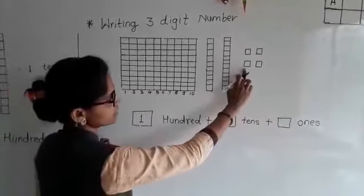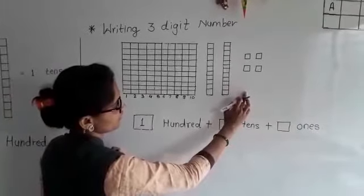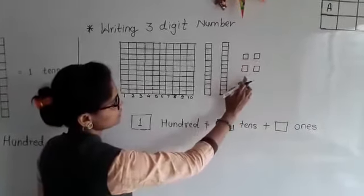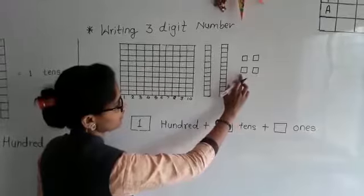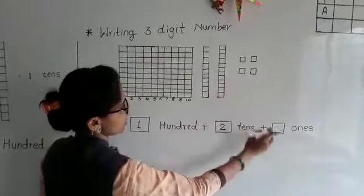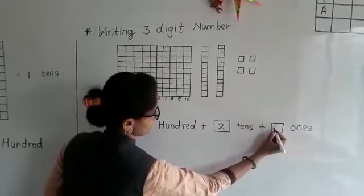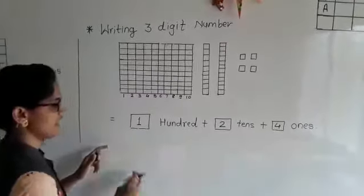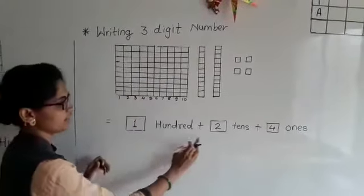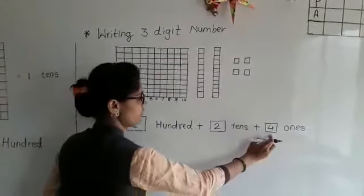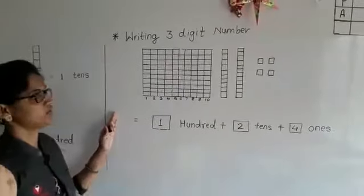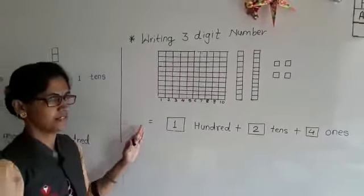Then next, there are squares. How many squares? 1, 2, 3, 4. These squares are ones. How many ones? Yes, four. Our answer is one hundred, two tens, and four ones. You have to write 3-digit numbers.